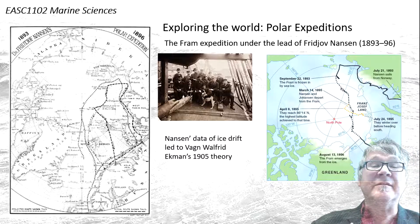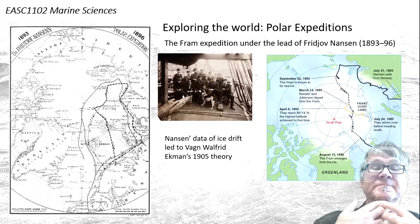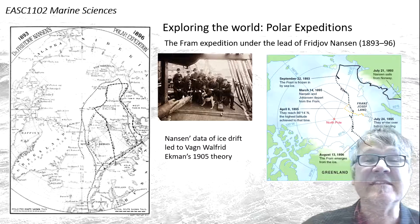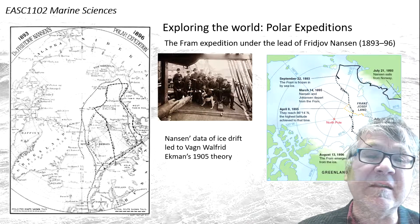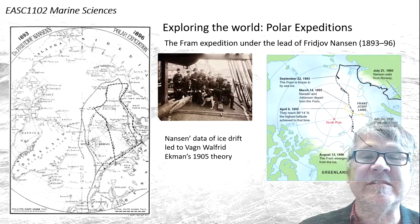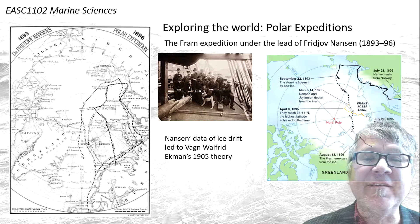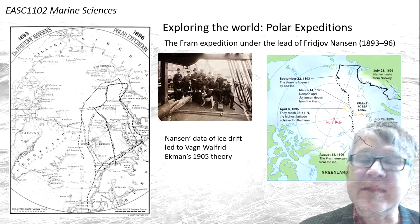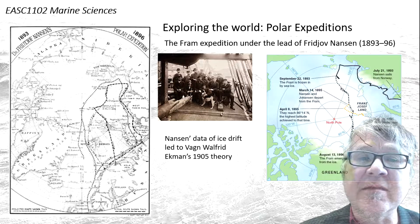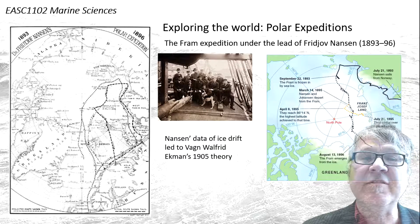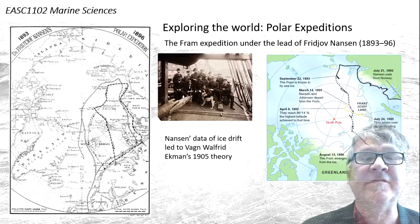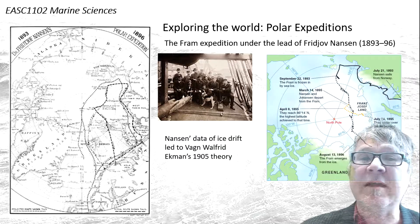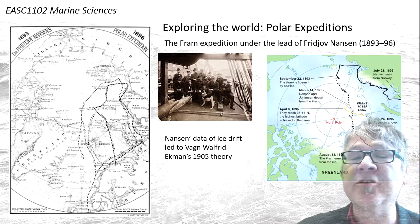The idea that Nansen had was to go there, let the vessel freeze into the ice at the beginning of winter, and then drift with the ice — trying to drift directly over the North Pole.